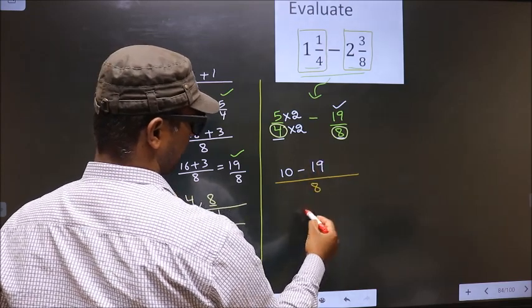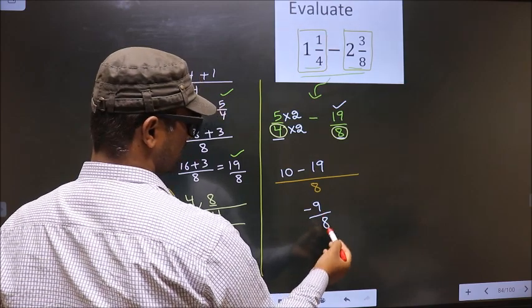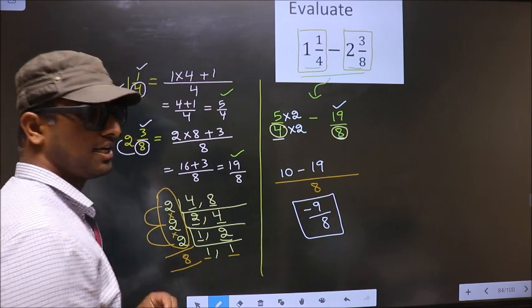So, 10 minus 19 is minus 9 by 8. We cannot simplify this fraction. So, this is our answer. Am I clear?